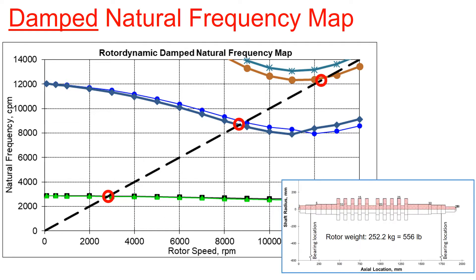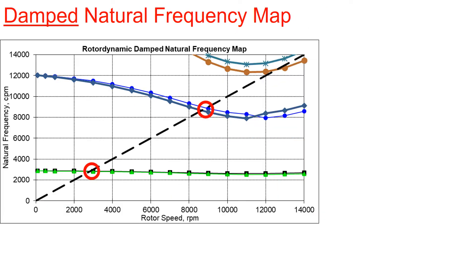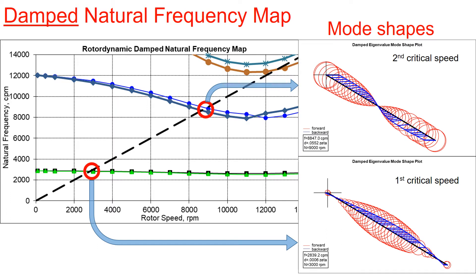The bottom right figure is the rotor model that corresponds to the damped natural frequency map shown in this slide. To understand the rotor motion, you could first start with checking the mode shapes at each critical speed. The critical speed is where the shaft speed coincides with the natural frequency, and the first two mode shapes are shown on the right. The mode shapes indicate that at that critical speed, the shape of the rotor motion will resemble what is shown on the right.